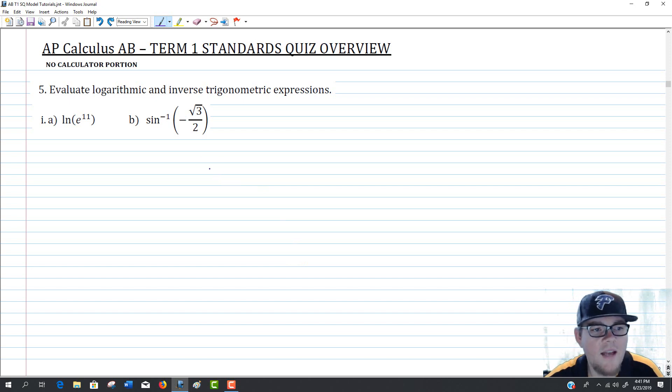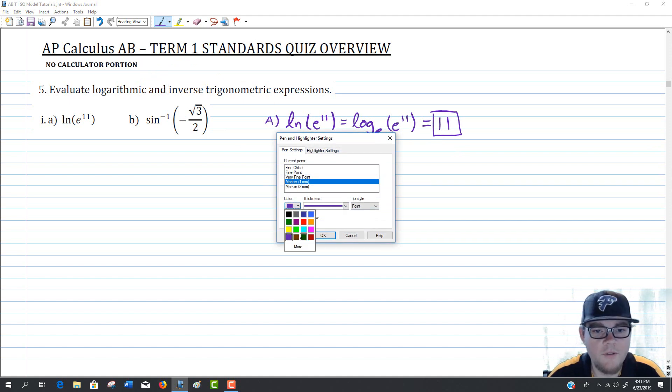Part A in this case asks us to evaluate the natural log of e to the 11. So of course, if you know what the natural log is, that is the same thing as log base e. So this is basically asking us what power of e gives us e to the 11th. Obviously that answer is 11. So pretty straightforward one to evaluate first.